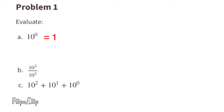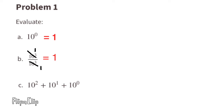B: 10 to the power of 3 over 10 to the power of 3. Any number divided by itself is always equal to 1. 10 to the third power divided by 10 to the third power is like 1 divided by 1, because they cancel each other out, and you can replace each of them with a 1.